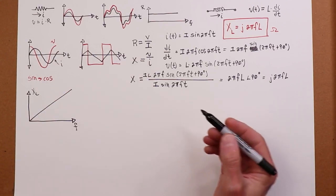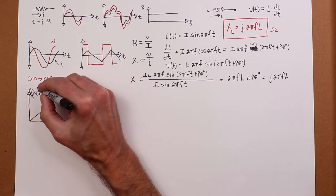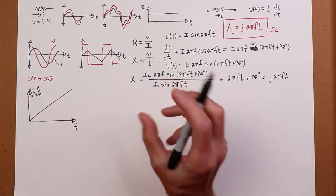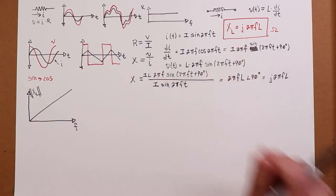Sometimes to distinguish, when we talk about magnitudes, we'll put little, like, absolutes around here, or even double absolutes, so that we know that we're talking about that number, X number of ohms. But there's really a J there. It's really at 90 degrees.